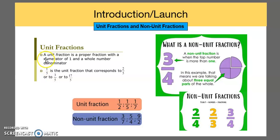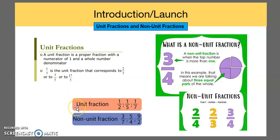A unit fraction is a proper fraction with a numerator of one and a whole number denominator. So for example, one-fifth would be a unit fraction, and two-fifths, three-fifths, and seventeen-fifths would not be a unit fraction. Here are some additional examples of what a unit fraction is. Notice all the numerators are one, while the denominators are one-half, one-fifth, and one-seventh.